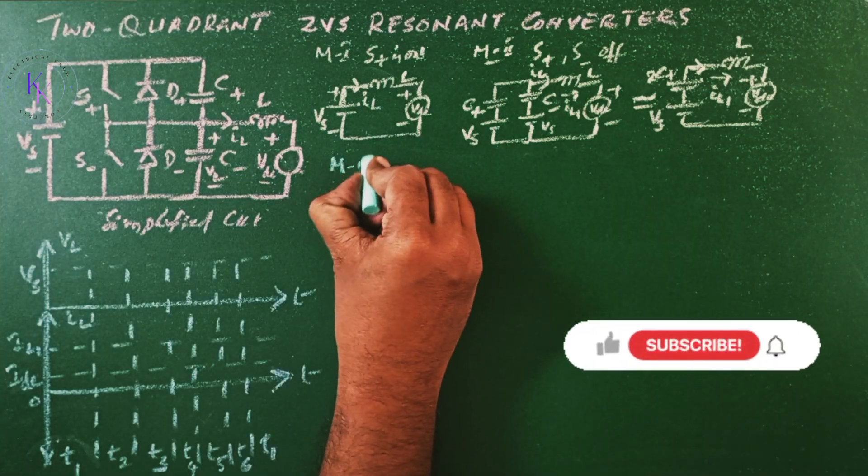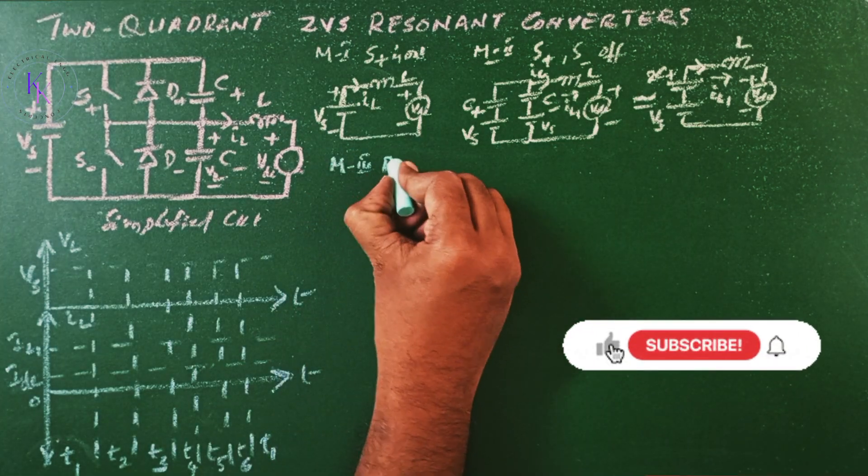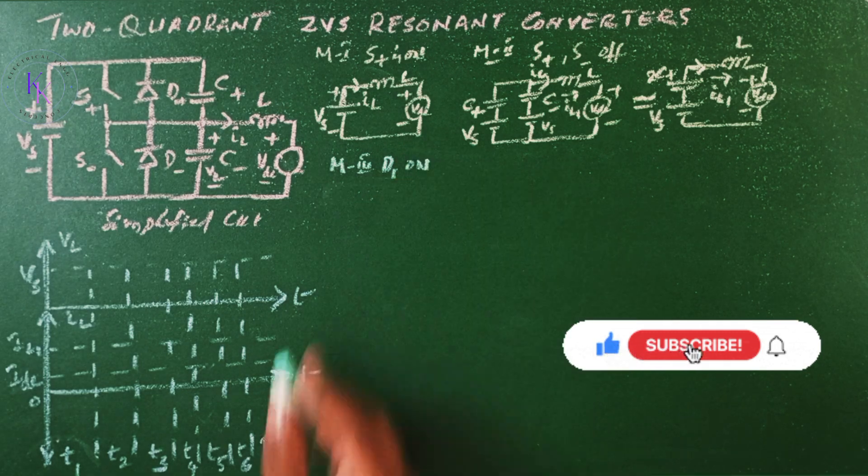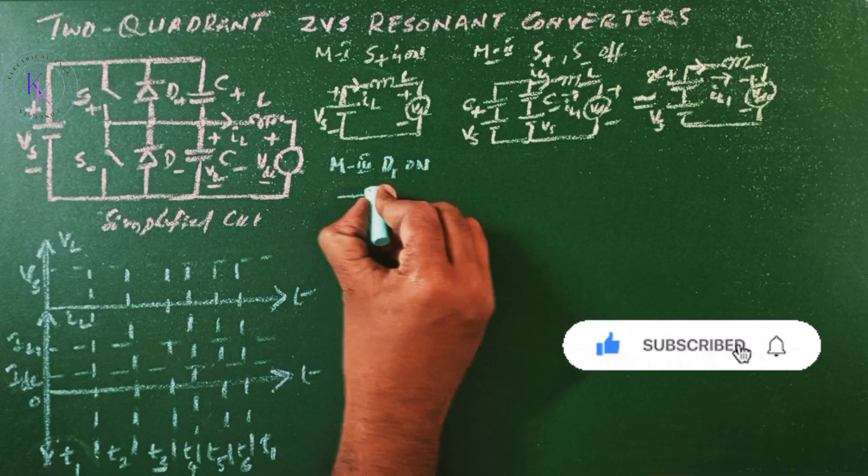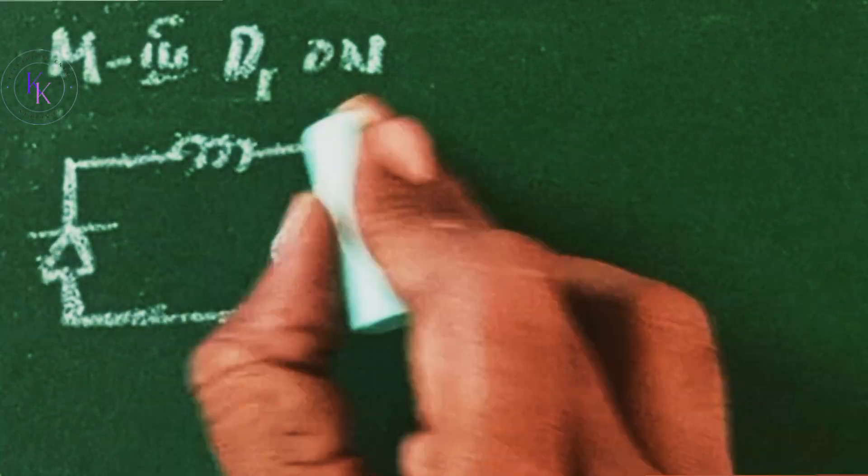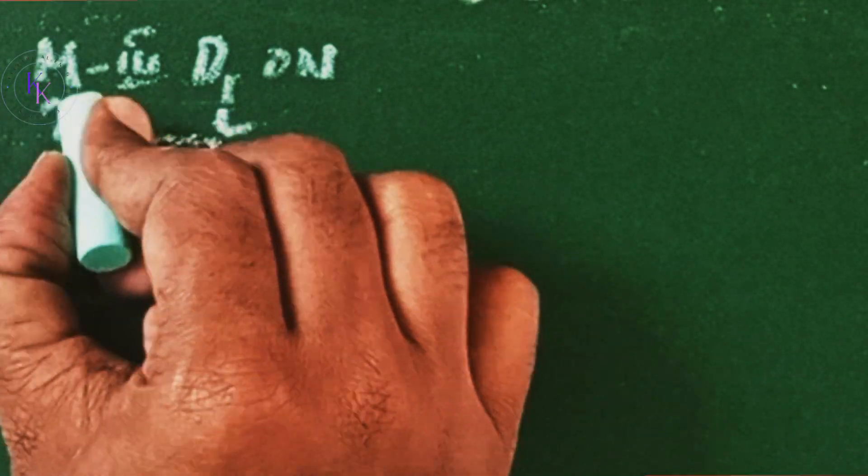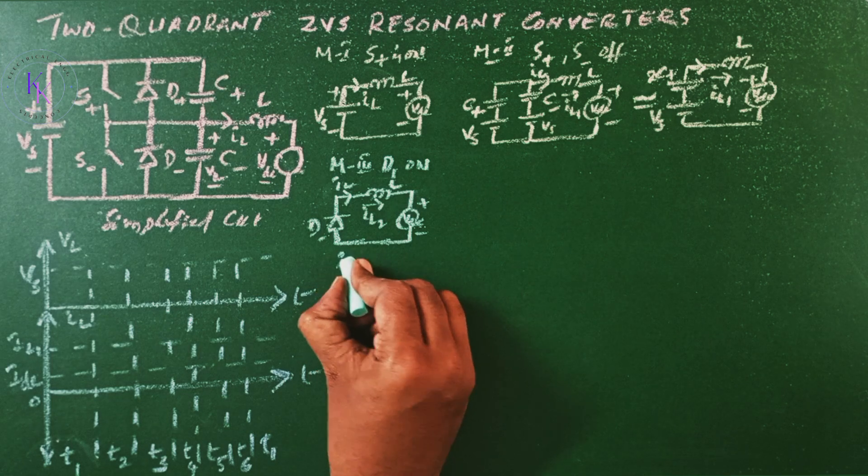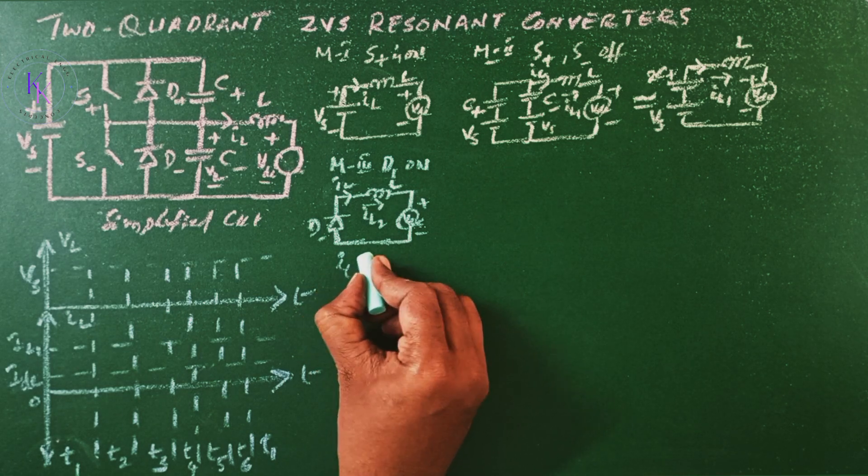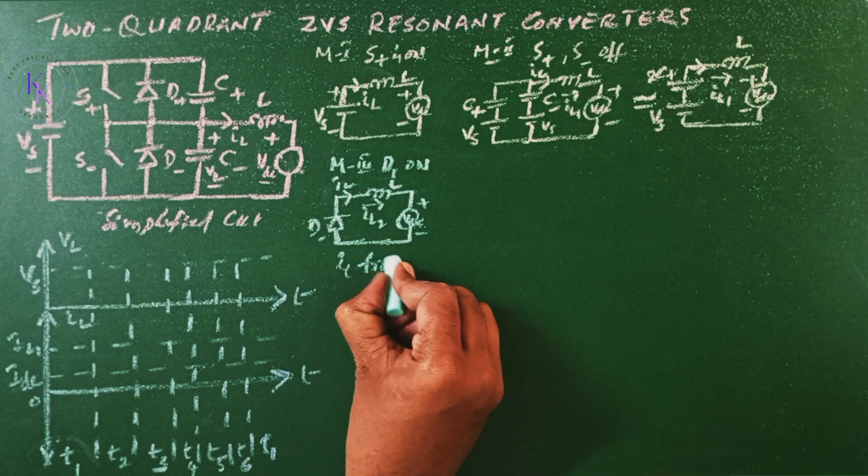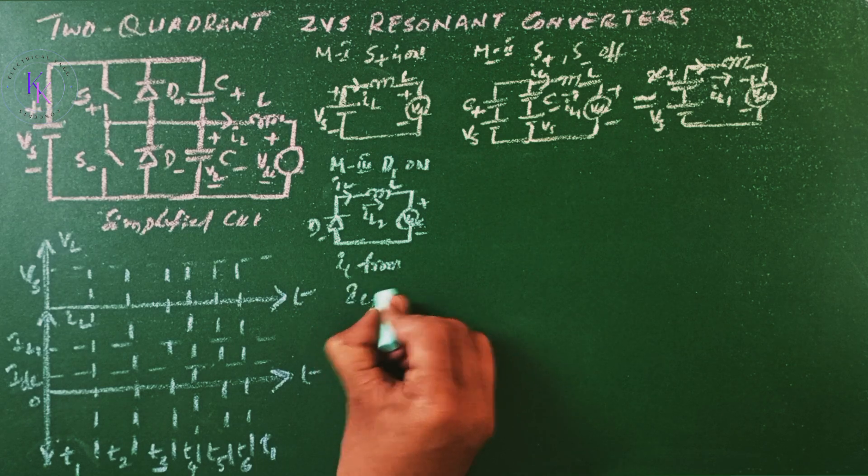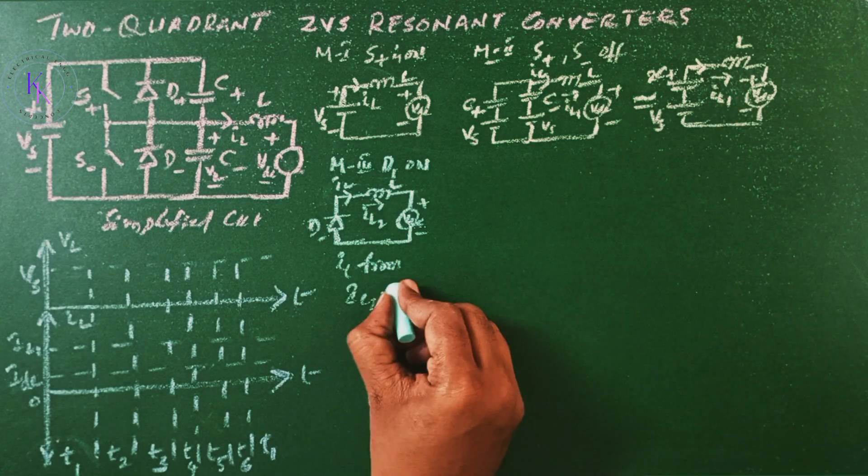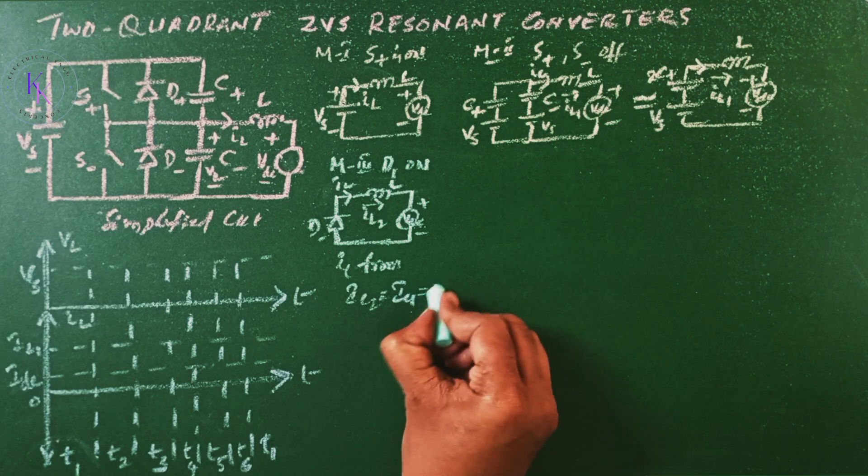Mode 3 starts when D minus diode turns on. The equivalent circuit for mode 3... The inductor current IL is going to fall linearly from IL2 which equals IL1 that equals 0.